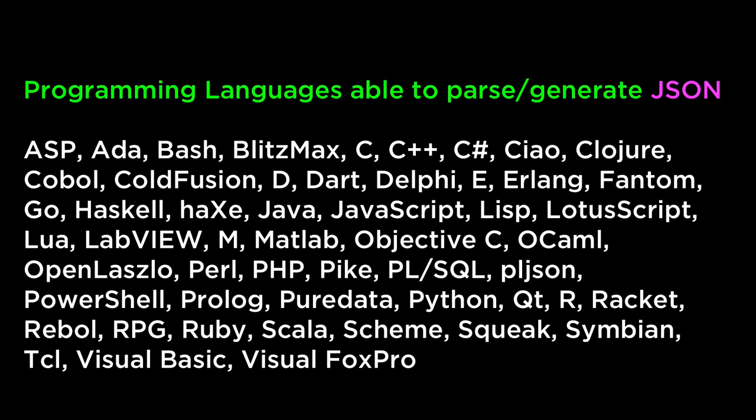JSON can be used as a data interchange format in many different programming languages. These are all of the programming languages that are able to parse and generate JSON data structures. So you can see that even outside of JavaScript, the JSON format can be used with many other systems and languages. This is very powerful because it means any system coded in these languages will be able to read and use JSON data, which is where GeoJSON comes in.